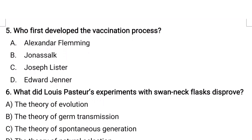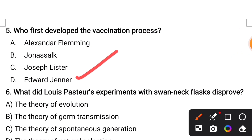Who first developed the vaccination process? Options are Alexander Fleming, Jonas Salk, Joseph Lister, Edward Jenner. The correct answer is Edward Jenner.